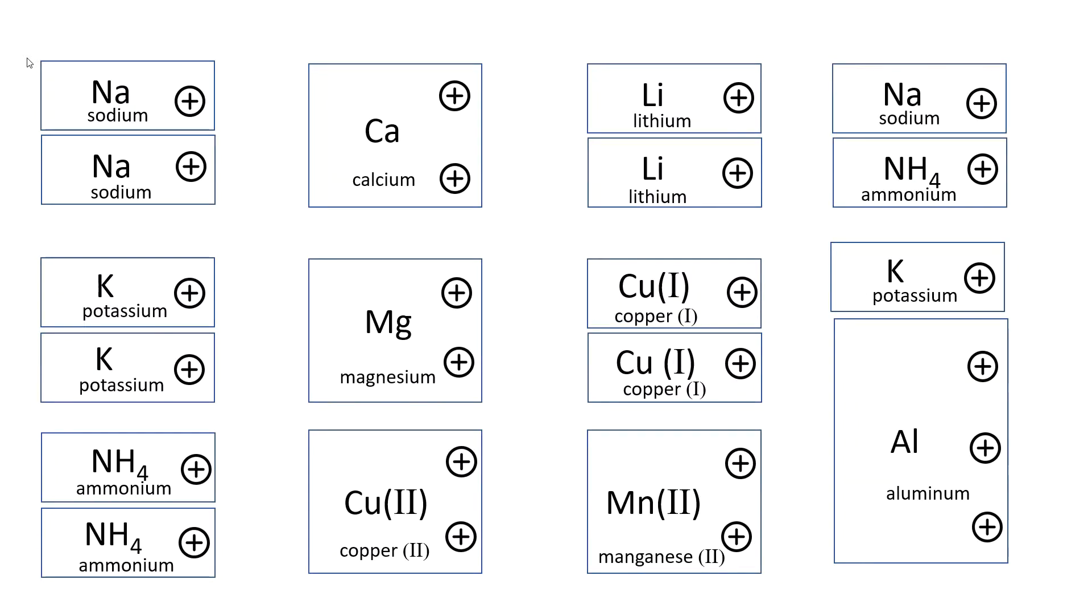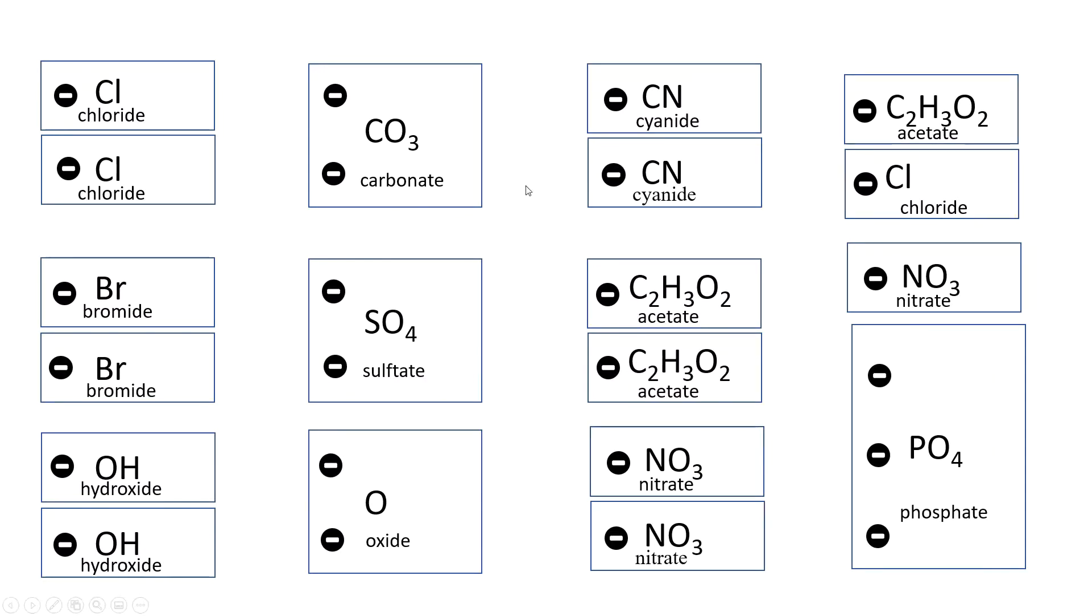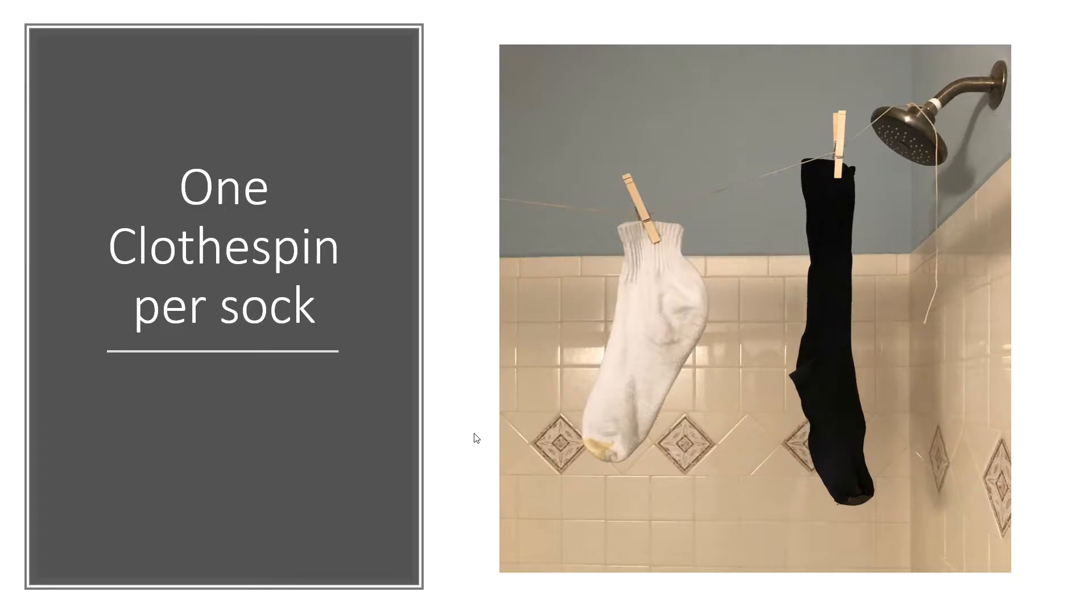We took a bunch of anions and cations and brought them together. Before we get into this, I want you to notice that the cation names are exactly as they are on the periodic table - sodium, potassium, magnesium, copper. They're exactly what the metals are on the periodic table. Ammonium is different, but that's a different story. The anions, though, all have names different than what's on the periodic table. So that's an important point.